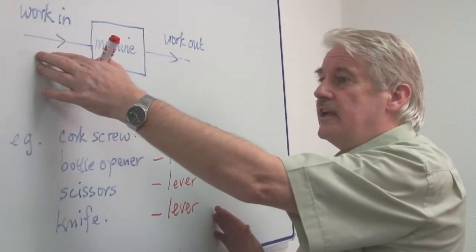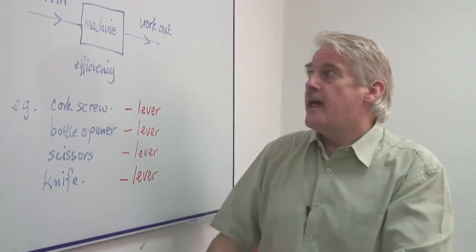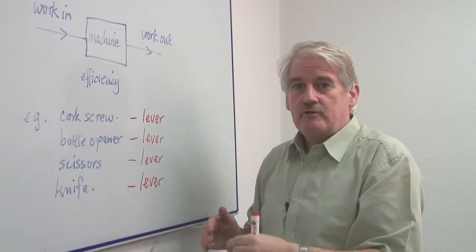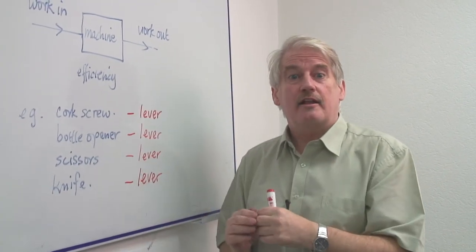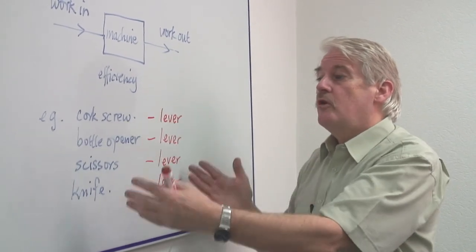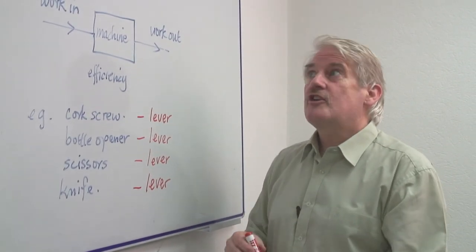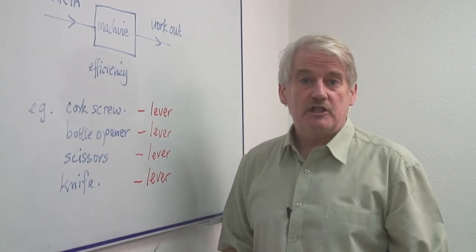You put one kind of work in which is usually a force. And you get another kind of work out which is a force somewhere else which is greater and enables you to do a particular task. So that is basically what simple machines are.